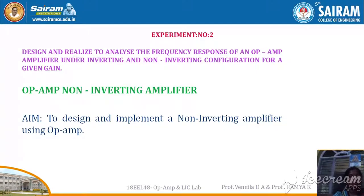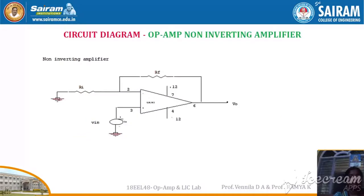Today we are going to discuss op-amp as a non-inverting amplifier. Aim: to Design and Implement a Non-Inverting Amplifier using op-amp. This is the circuit diagram of a non-inverting amplifier. Here, non-inverting amplifier means we are giving input at the non-inverting terminal, which is pin number 3. Pin number 2, and between pin number 6 and 2, we are providing the negative feedback. At pin number 7 we are giving plus VCC and pin number 4 we are giving minus VEE, which is 12V. Output will be taken at pin number 6.